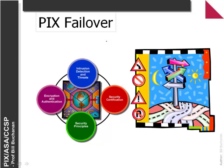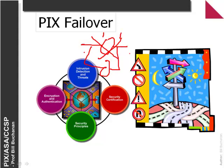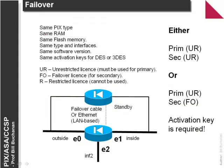A key feature of the PIX ASA is failover. The last thing we want is for a main firewall to fail, as it can cause the whole network to fail. We typically have a backup failover device in parallel with the firewall that watches it to detect when it goes down. With failover we typically have either an Ethernet LAN-based connection or a special failover cable. The two devices should have the same PIX ASA type, same RAM, same flash memory, same interface types, same software version, and the same activation keys.